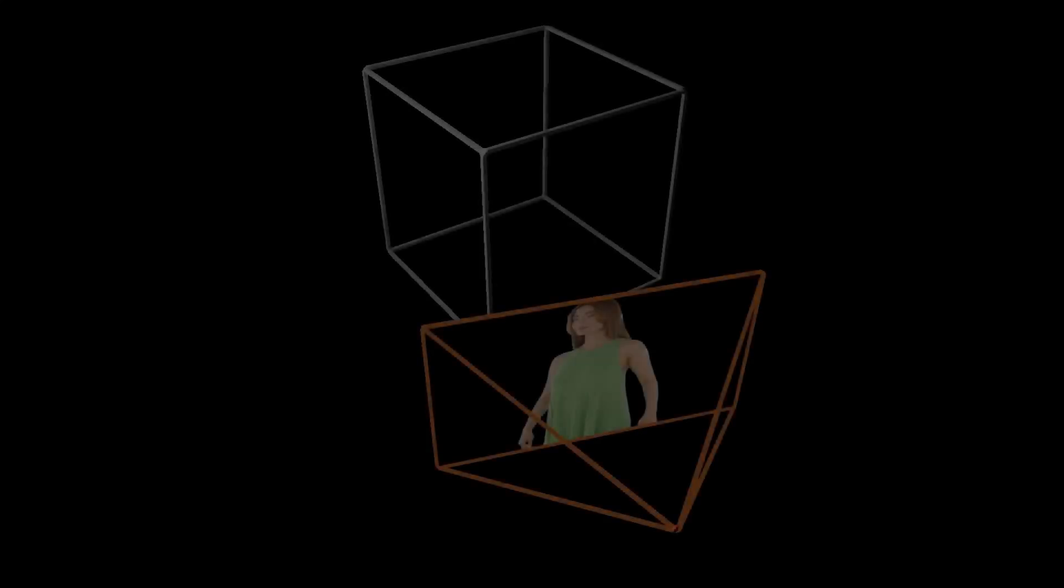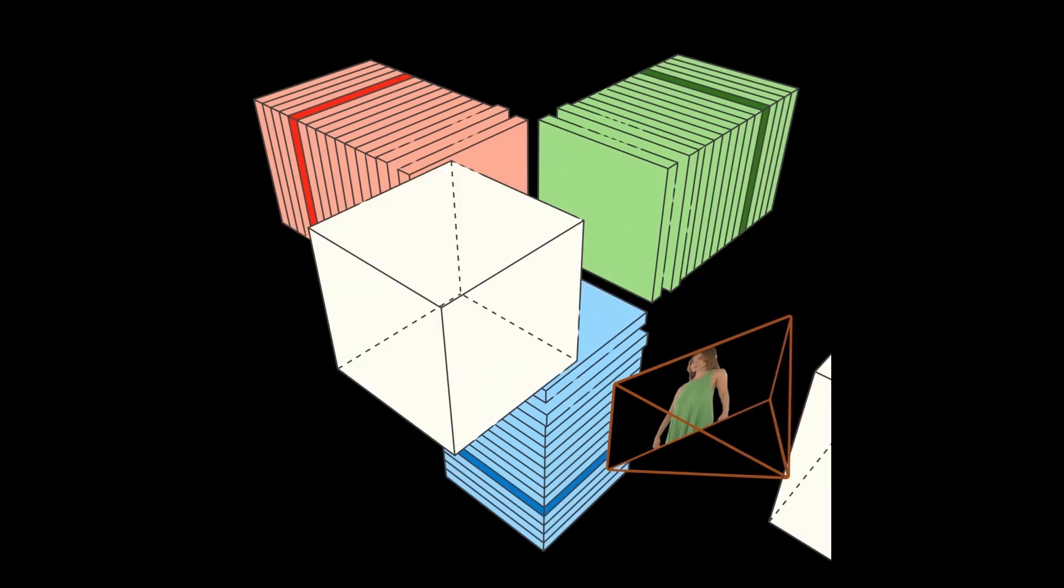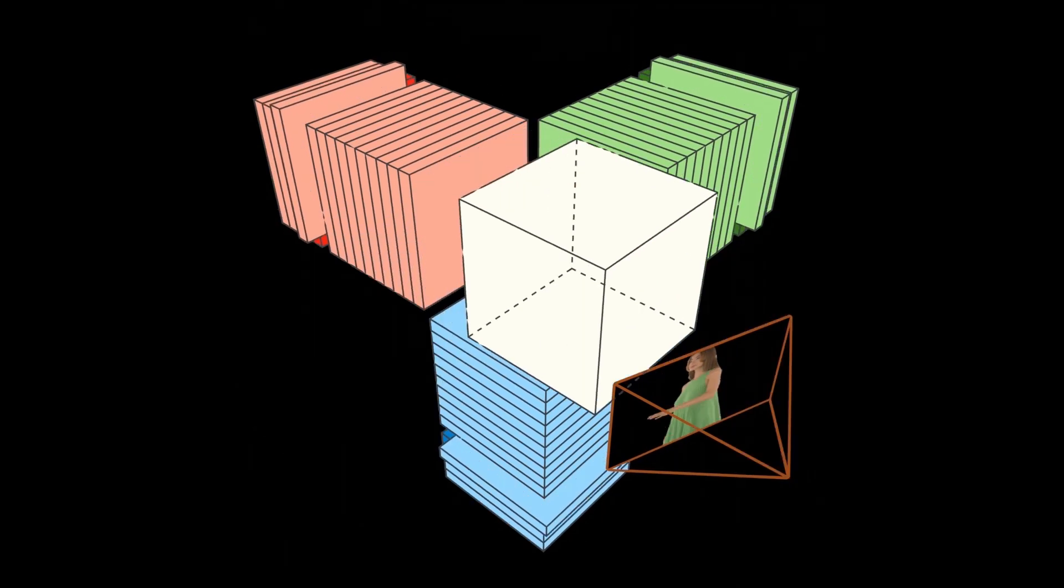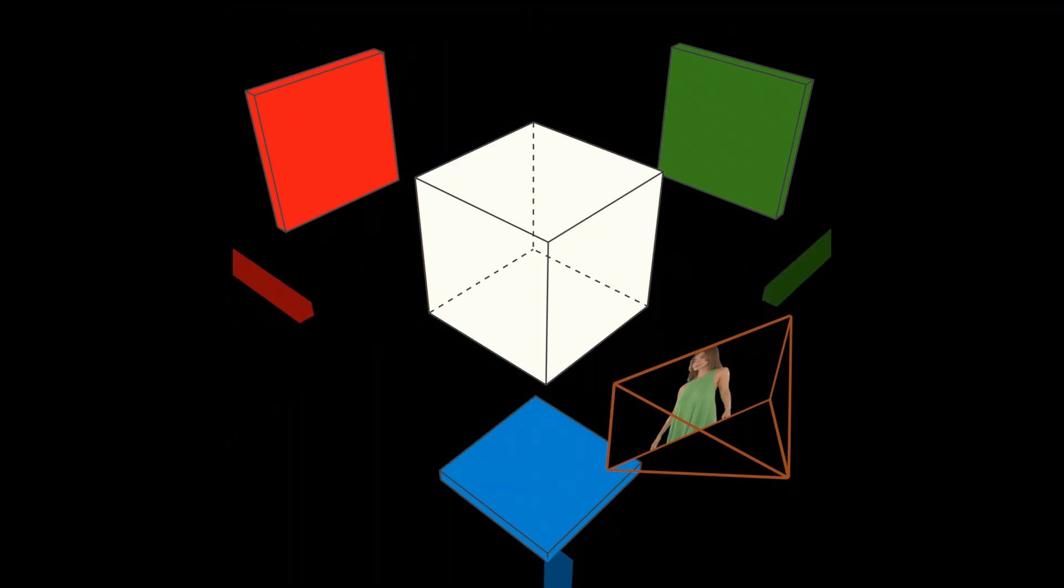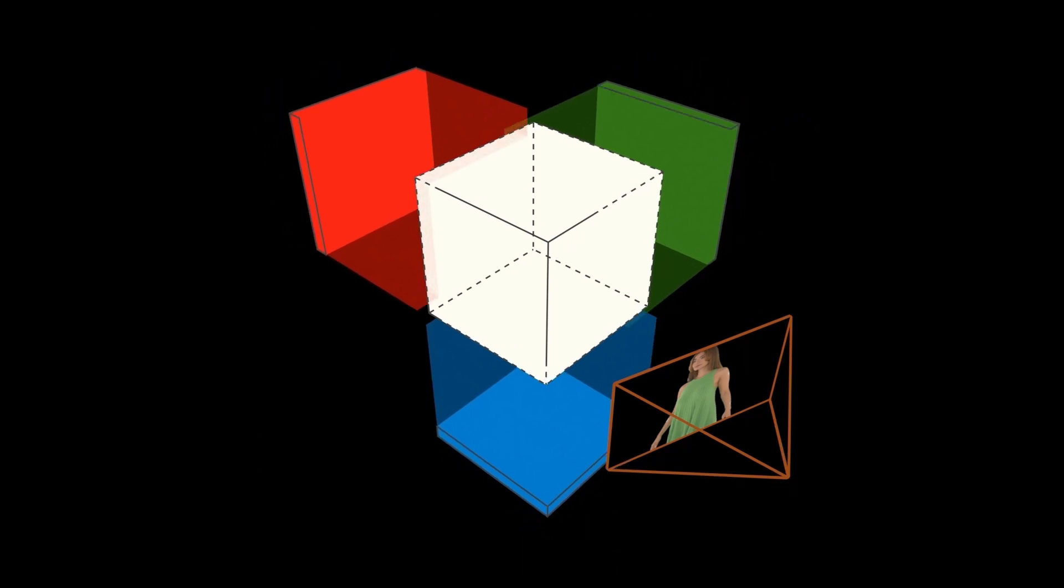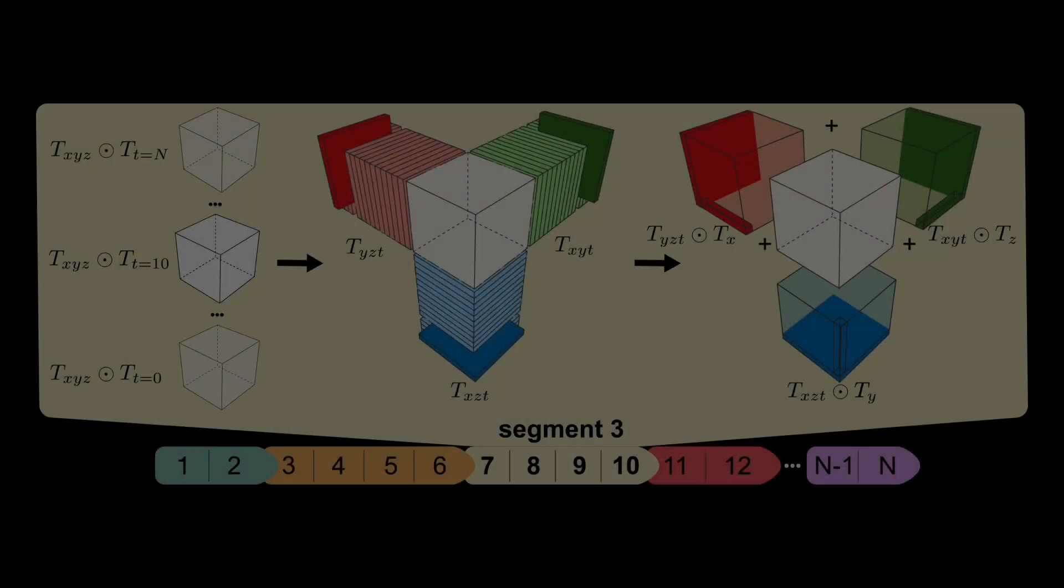HumanRF uses volume rendering to synthesize views from a neural radiance field. For a frame at time t, we first pick the according XYZ spatial feature volume and the corresponding spatio-temporal 2D feature slices. Using the outer product, those slices are lifted to 3D and summed up with the XYZ feature volume. We supervise our differentiable rendering pipeline with 2D-only losses that measure the errors between the rendered and input RGB images and foreground masks.